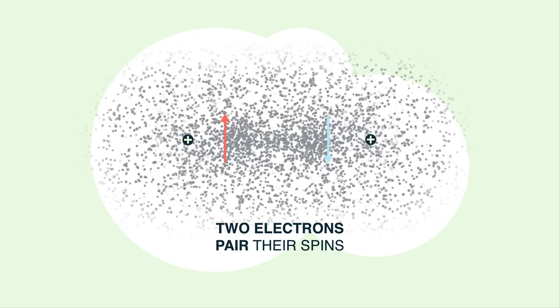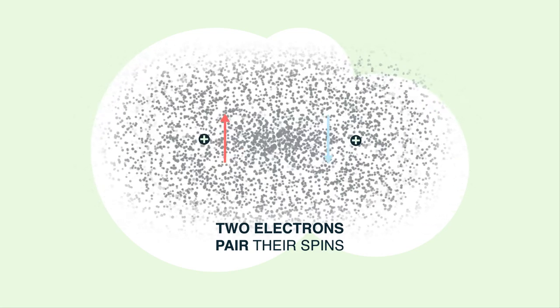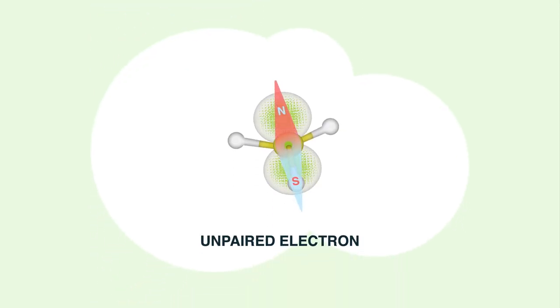When chemical bonds are formed, two electrons pair their spins. However, in some cases, single unpaired electrons are present.